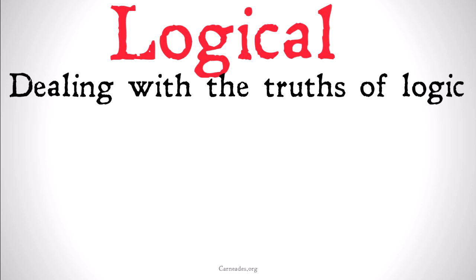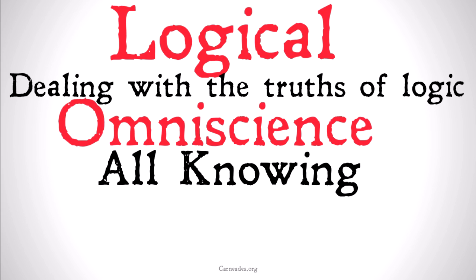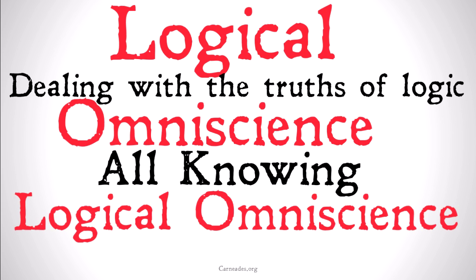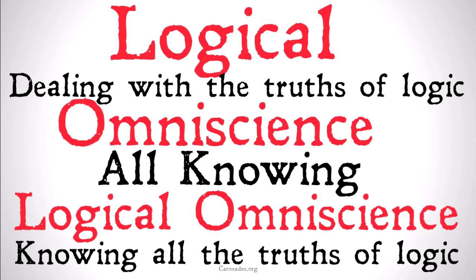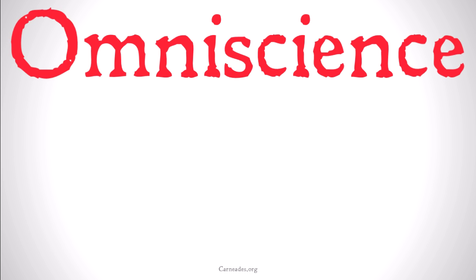Logic deals with the truths of logic, and omniscience is all-knowing. So just from the basic words, we can guess that logical omniscience is knowing all the truths of logic — which is going to be correct. If you are logically omniscient, you know all the truths of logic, or you're able to use all the truths of logic to correctly conclude all of the right conclusions or consequences of all of your beliefs or knowledge.